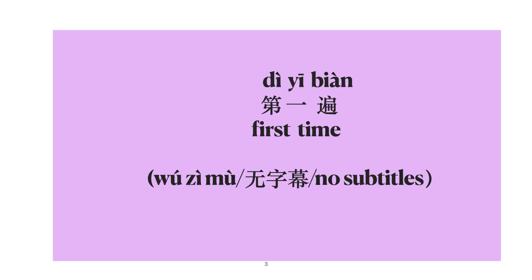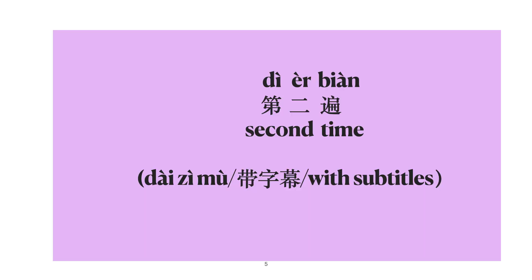第一遍 — first time, no subtitles. 第二遍 — second time, with subtitles.